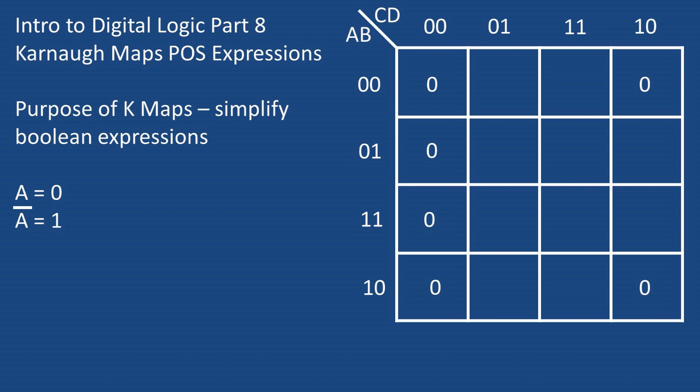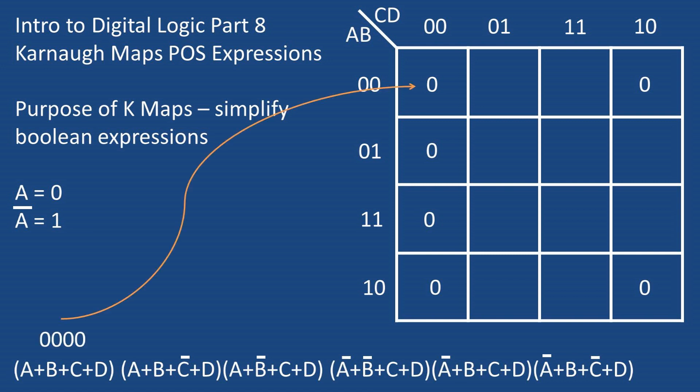Now let's look at a product of sums formula and put it into the Karnaugh map. The first group A+B+C+D can be mapped and represented by placing a zero in the first row, first column.